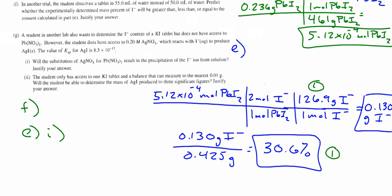Last two. Or not. Wait, what am I doing? Nice letter formations. Part G. A student in another lab also wants to determine the I- content of KI tablet, but does not have access to Pb(NO3)2. However, the student does have access to silver nitrate, which reacts with I to produce AgI. The value of Ksp for AgI is 8.5 times 10^-17. Woo! Will the substitution of AgNO3 for Pb(NO3)2 result in the precipitation of the I- from solution? Justify your answer. There's two ways you can do this. Will this be caused? Does Ag make a precipitate with I? The answer is yes.